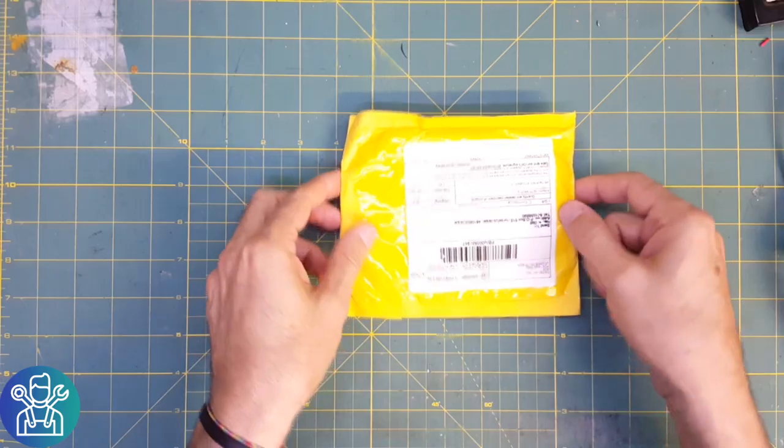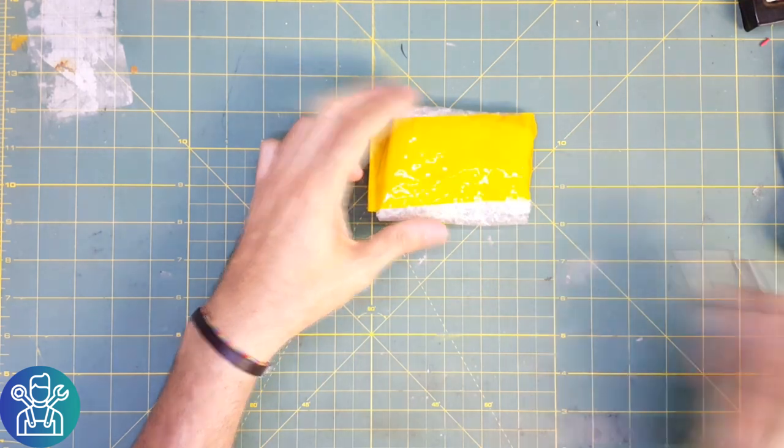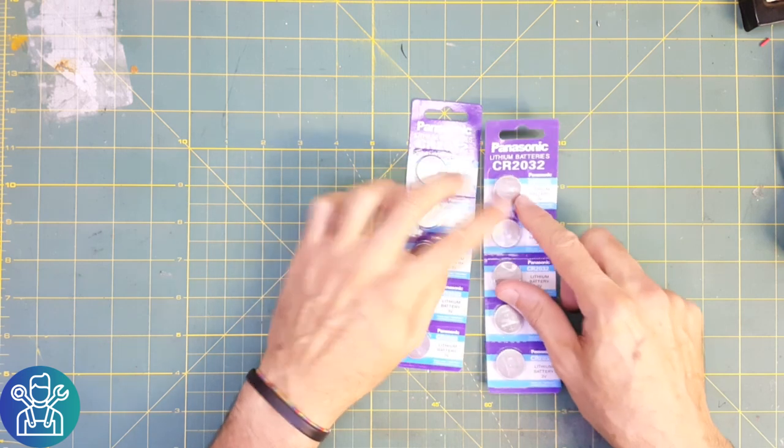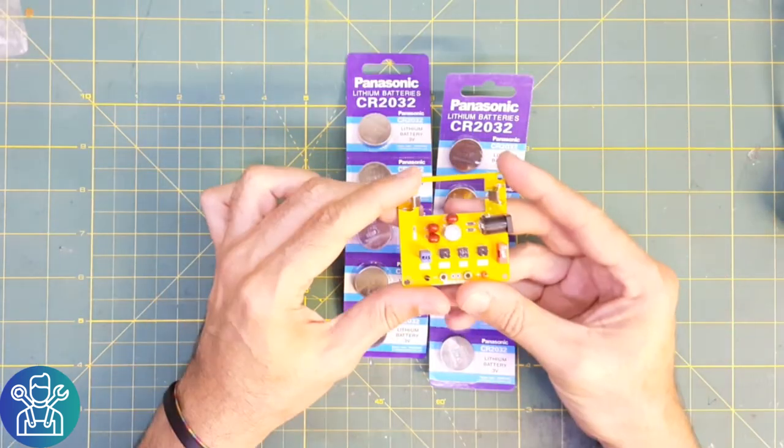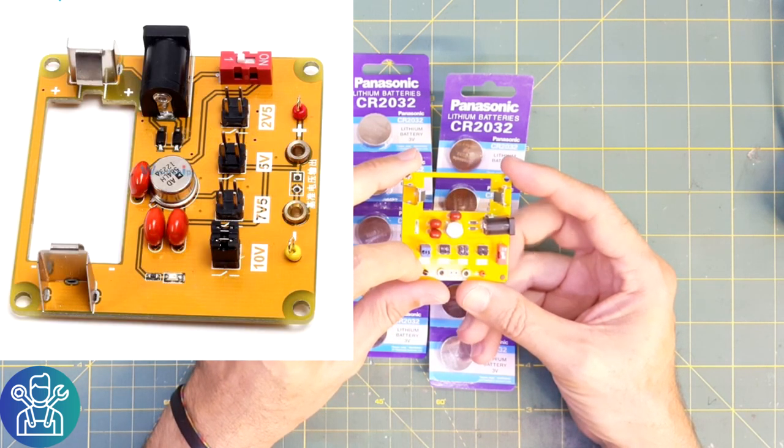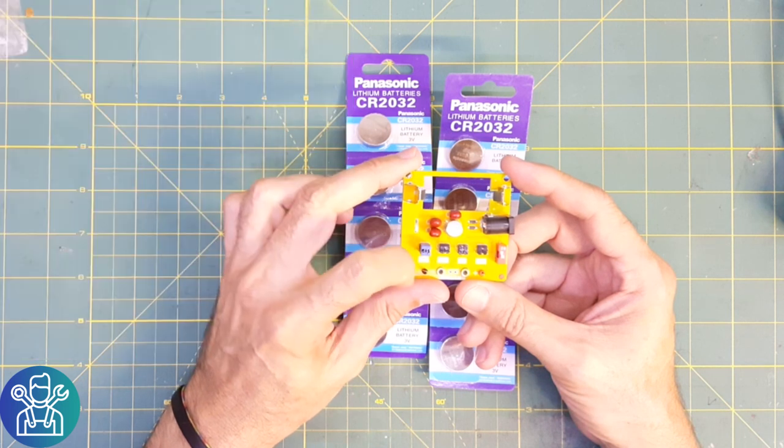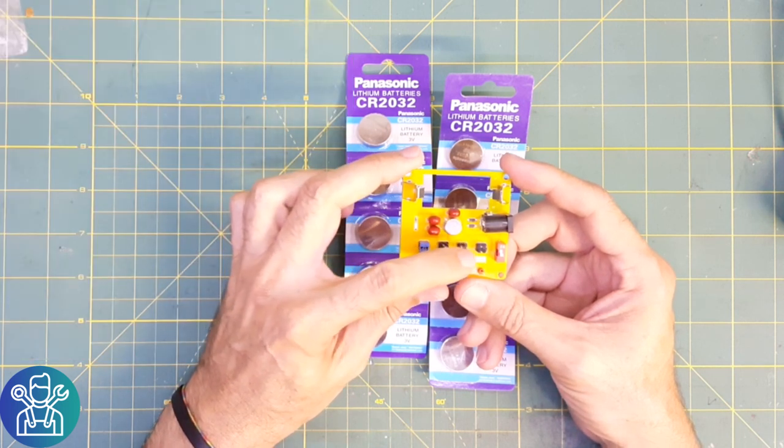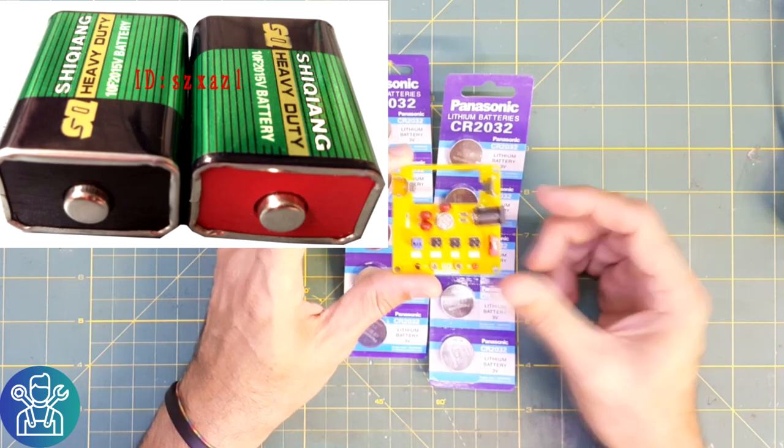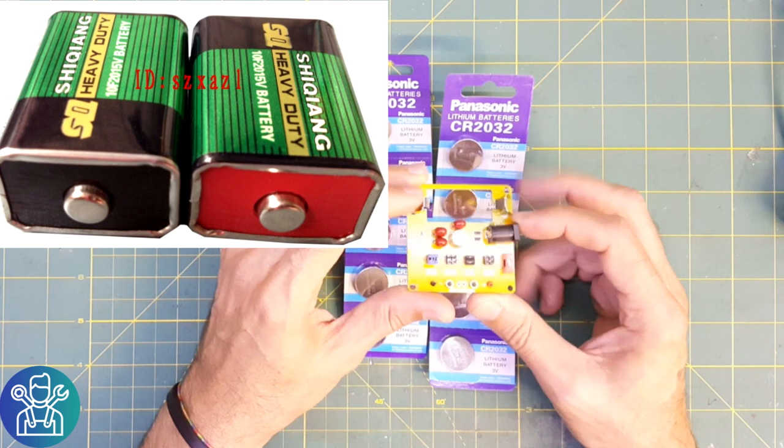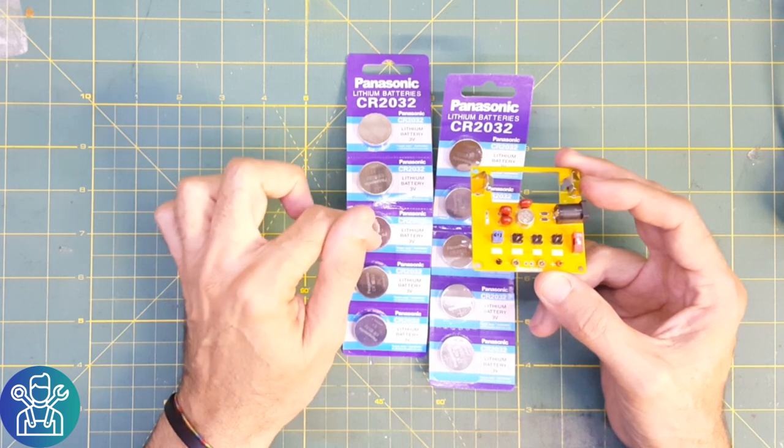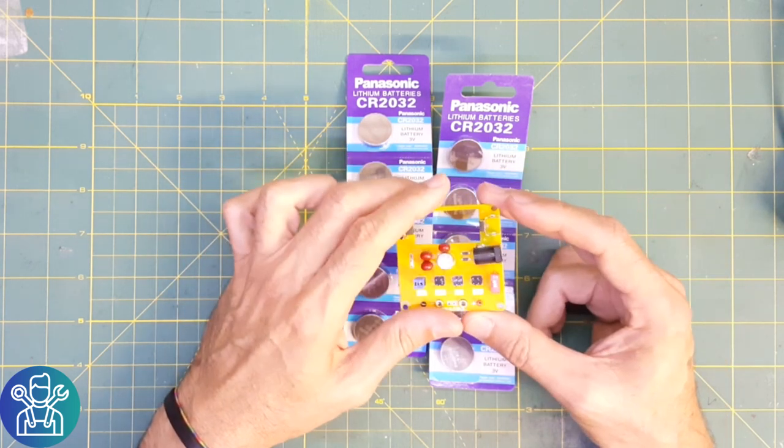These are CR2032. I have this voltage regulator that outputs very accurate voltage: 10 volts, 7.5, 5 volts, and 2.5, and it needs a very special battery. I searched to see what I can find and I saw some guy that built a battery out of four or five of those batteries.